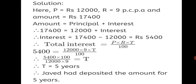Now using I = (P × R × T) / 100: 5400 = (12,000 × 9 × T) / 100. Keeping T on one side: T = (5400 × 100) / (12,000 × 9). Reducing zeros and dividing 54 by 9 gives T = 5 years. Therefore Javed had deposited the amount for 5 years. Use the same formulas, substitute given values, and find the remaining unknown.